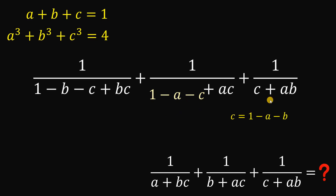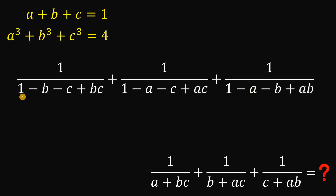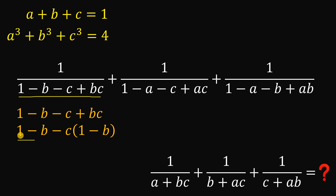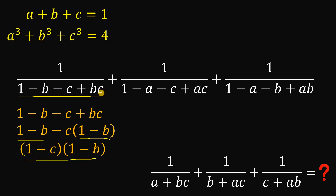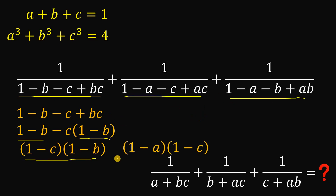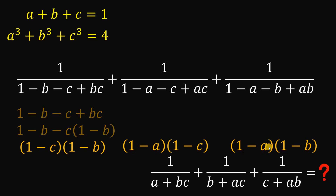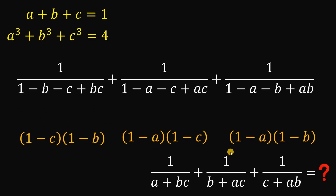We can replace A, B, and C respectively in each denominator. For the first denominator, substituting A gives us (1 minus B minus C) plus B, and factoring out negative C, we notice 1 minus B appears twice as a common factor — giving us (1 minus C)(1 minus B). The second denominator factors as (1 minus A)(1 minus C), and the third factors as (1 minus A)(1 minus B). These are the new denominators of our fractions.